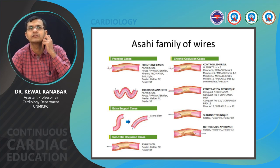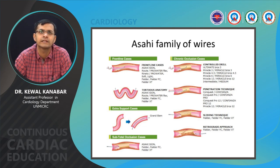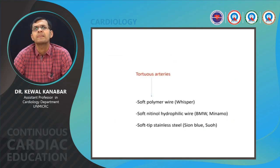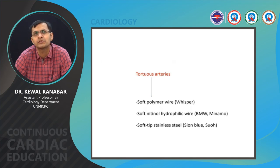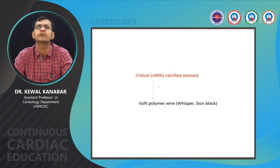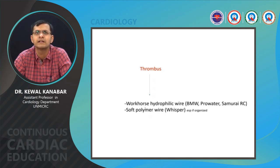For frontline use, start with a Sion wire, Fielder FC, or Fielder XT. For tortuous anatomy, use Fielder XT. For extra support, use the Grand Slam wire. For subtotal occlusion, Sion and Fielder FC are extremely useful. For chronic total occlusion, the Asahi Miracle series (3, 6, 12) and Fielder group are very useful. For tortuous vessels, frequently use the Whisper wire and Sion Blue wire. For critical stenosis more than 90 percent, especially calcified, a polymer coated wire like Pilot 50, Whisper, or Sion Black is extremely useful. For thrombotic lesions, routine wires like Whisper or BMW work fine.